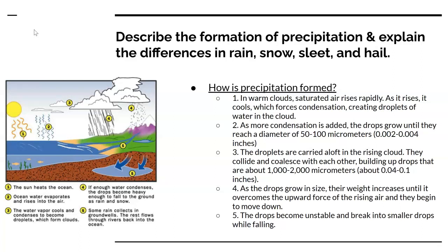The picture on the left shows basically what the water cycle is. The first step is the Sun heats the ocean, then the ocean water evaporates and rises into the air. The water vapor cools and condenses to become droplets which form clouds, and then if enough water condenses, the drops become heavy enough to fall to the ground as rain and snow.